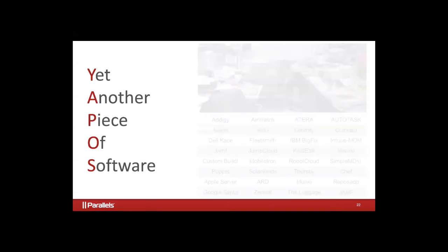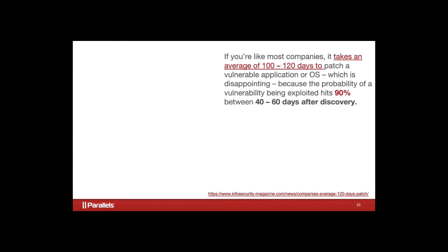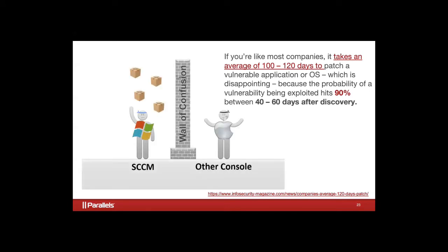The second bad choice is buying a totally separate console to manage your Macs — what we call YAPPOS, or yet another piece of software. And how do you choose which one is good for you? Which one will be easiest to implement? Back to that statistic that 90% of breaches have patches available: it's hard enough in a Windows environment to get those patches pushed out because you have to test them against your internal applications. If it takes 40 to 60 days after discovery to get a patch updated in a Windows environment, what are you going to do with a second console and a completely different team?